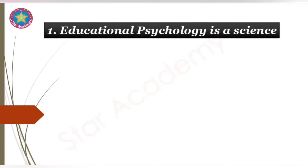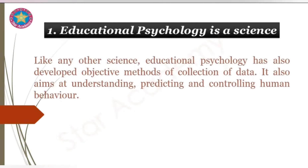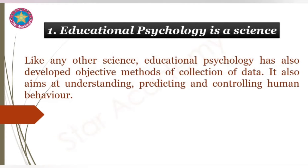Number seven, to study the educational significance and control of emotions, and to give an understanding of the principles and techniques of correct training. Additionally, educational psychology, like any other science, has developed objective methods of collection of data. It also aims at understanding, predicting, and controlling human behavior.